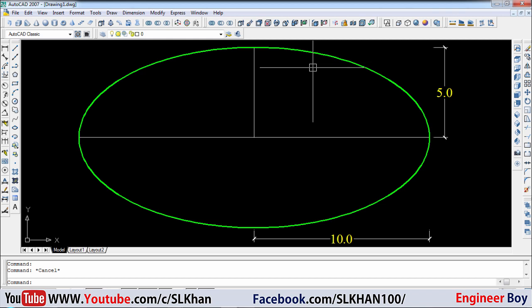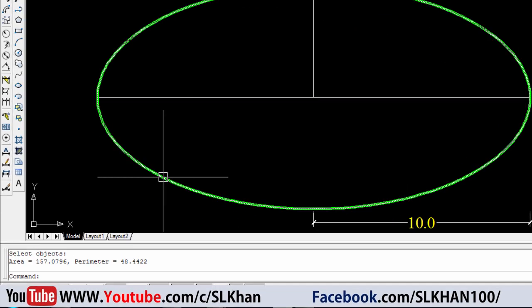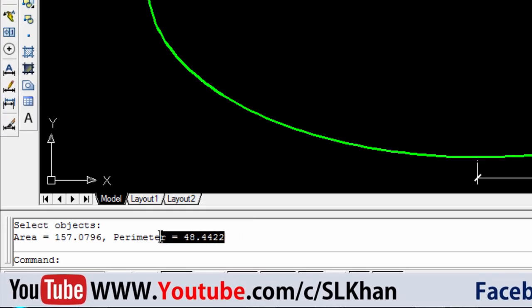So how can we do that? I'm going to use an area command by typing double A in the command box, and then over object, and I'm going to click this perimeter. As you can see, we got area and perimeter.